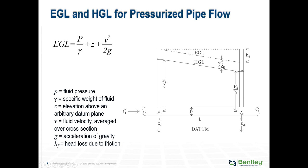If we look at point number 2, we see the same components — elevation, pressure, and the velocity head — giving us the energy grade line component. We see that the difference between point 1 and point 2 shows a reduction in energy. The mathematical explanation for that is that there are some losses; some energy is lost when we move from point 1 to point 2. The largest portion of this head loss is due to friction in the pipe.